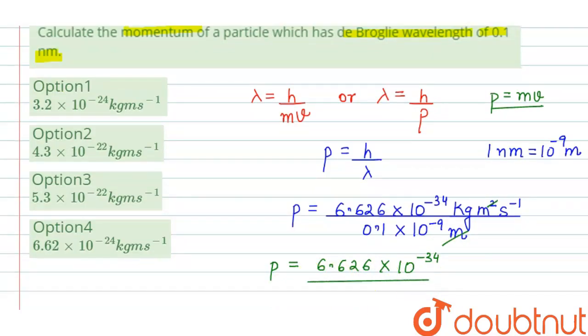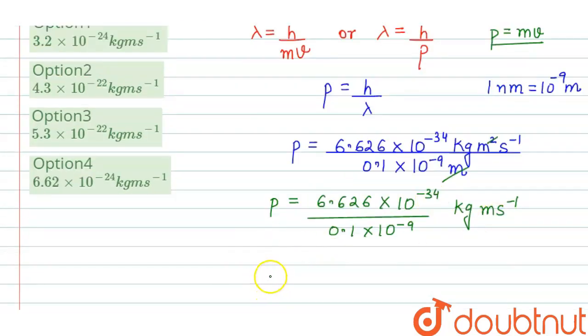divided by 0.1 into 10 raised to the power minus 9 kg meter second inverse. On solving this, we will get momentum equals 6.626 into 10 raised to the power minus 24 kg meter second inverse.